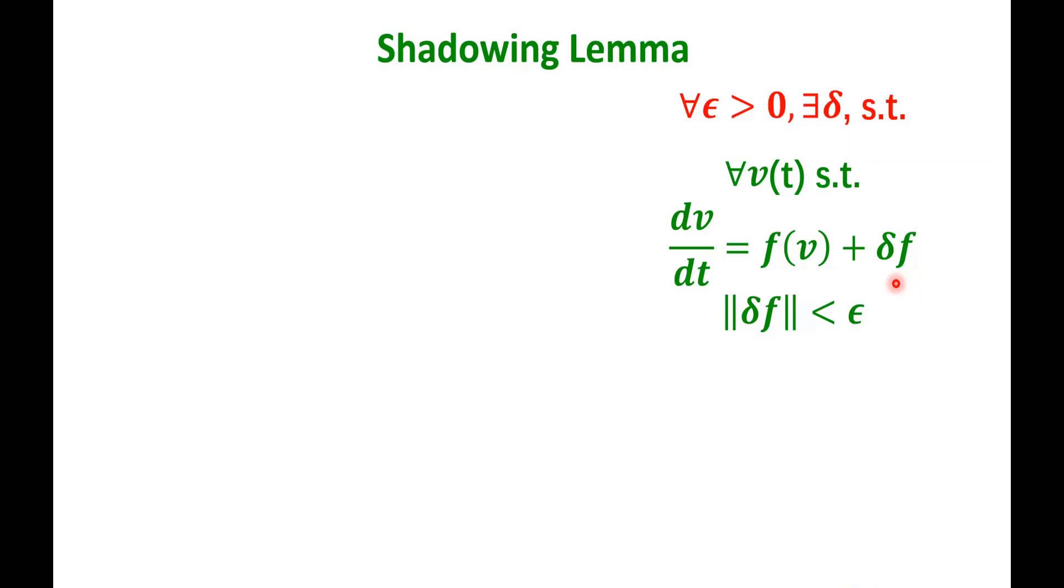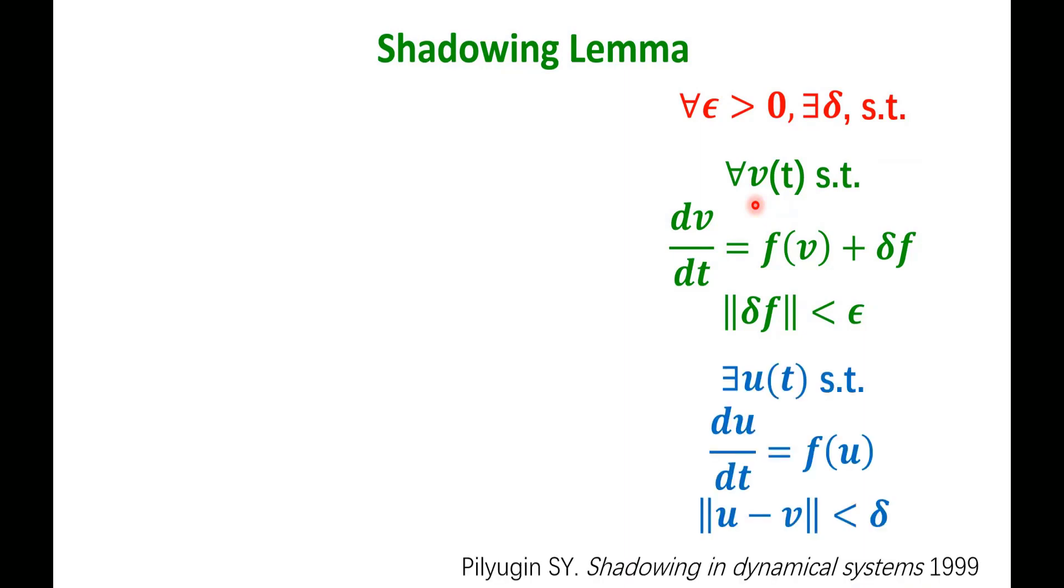That's exactly the kind of butterfly control we are looking at. And the magnitude of the perturbation is less than epsilon. This is the epsilon delta statement. So for any v that satisfies an only slightly perturbed epsilon perturbed equation, there exists another solution that actually satisfies the unperturbed differential equation. And the difference between u and v, each satisfying a slightly different equation, is less than delta.